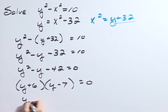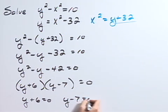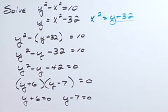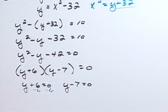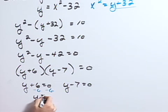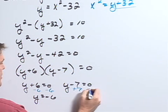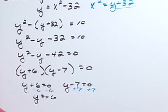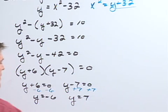Set each factor equal to zero. y plus 6 equals 0, or y minus 7 equals 0. Subtracting 6 from both sides gives y equals negative 6. Or, adding 7 to both sides gives y equals 7.